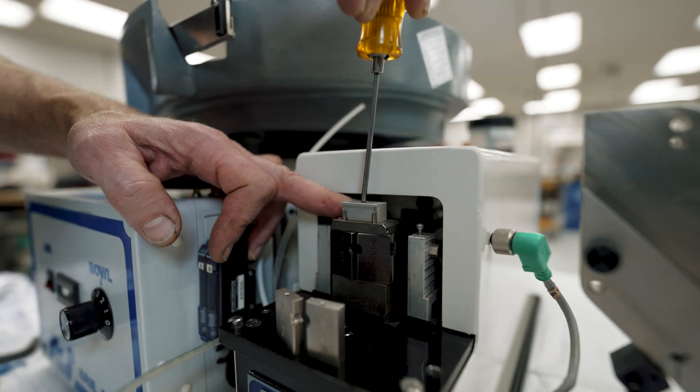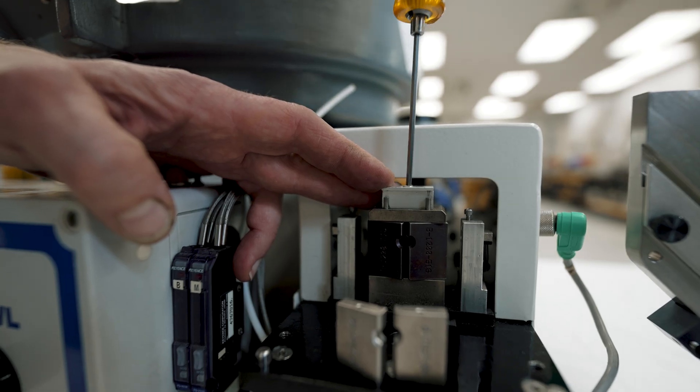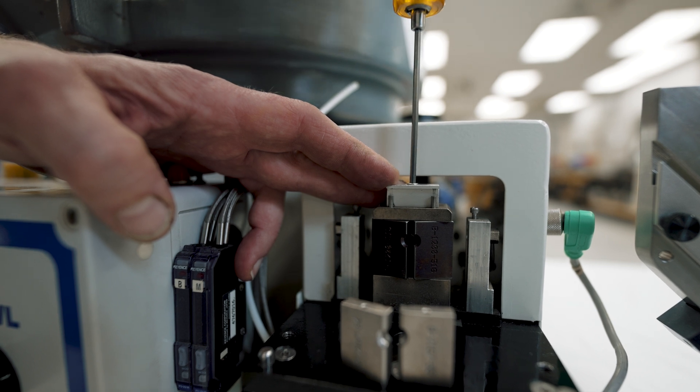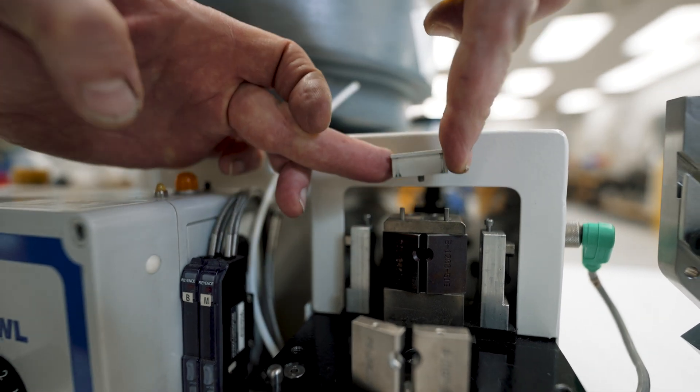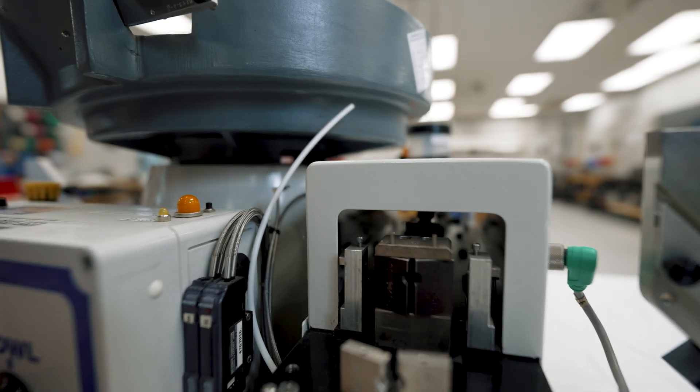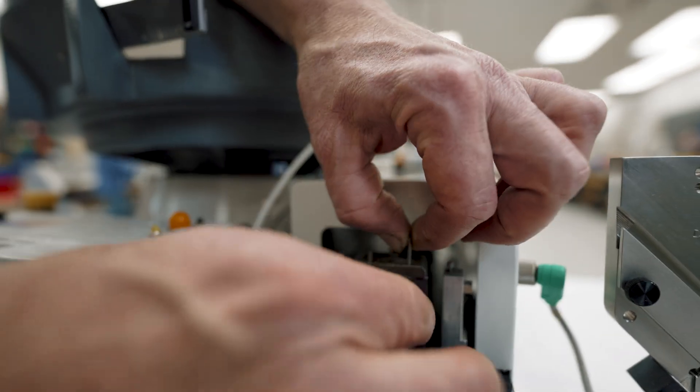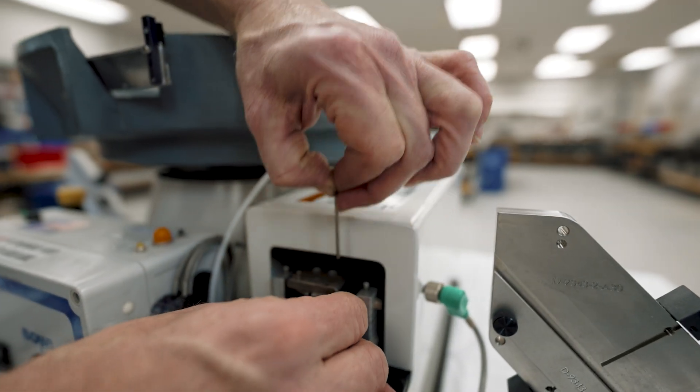So this is the same size screw that we used for our bowl discharge. So that simply unscrews. You can either do these one at a time or pull them both out.